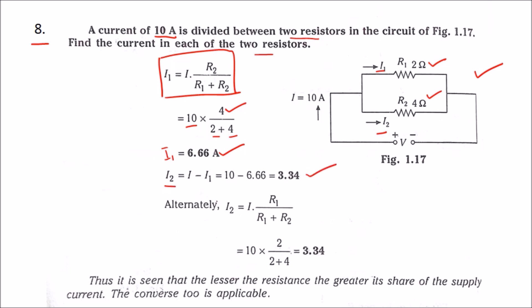Alternatively, you can use the formula that we used to calculate i1, and that will be the same, 3.34 amps. From this we can say that thus it is seen that the lesser the resistance, the greater its share of the supply current.